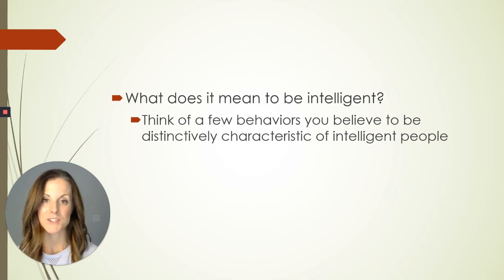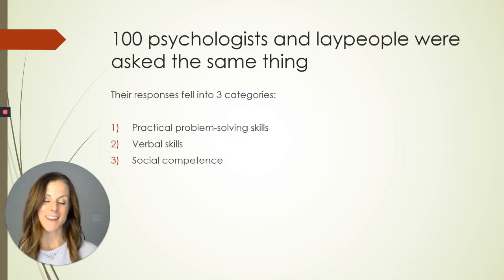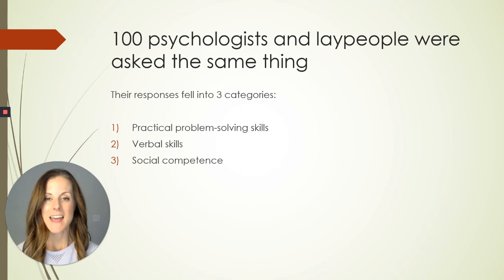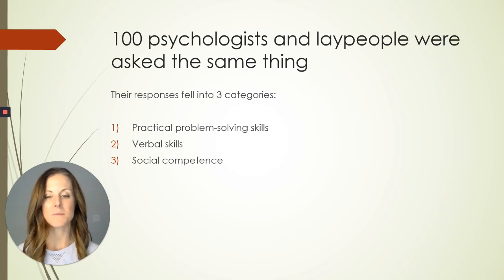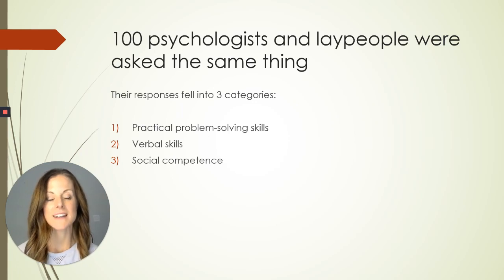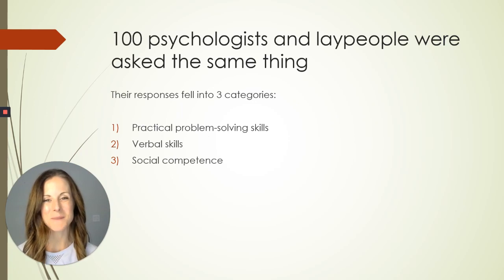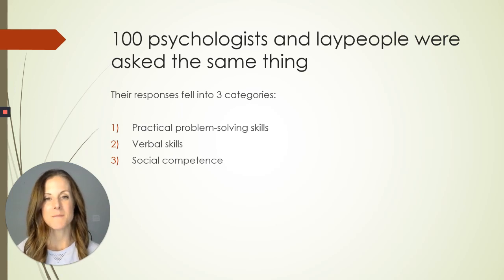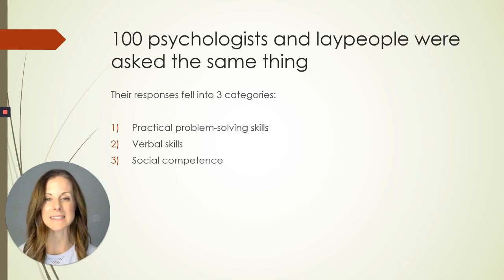That kind of question has been asked to many psychologists and non-psychologists alike, and generally their responses can fit into three categories. People think that intelligence is marked by practical problem-solving skills, verbal skills, and social competence. Compare your responses to this and see what you think. I would argue there's no right or wrong answer here, but I'm going to pose some questions to you because I would argue that we don't value these three things equally.